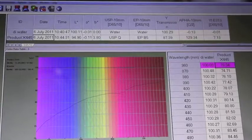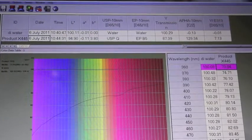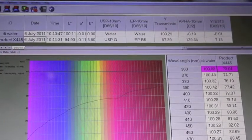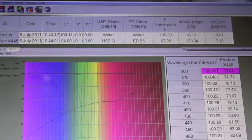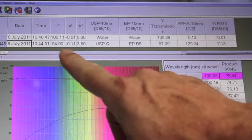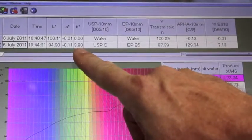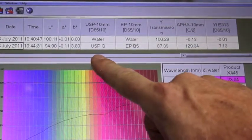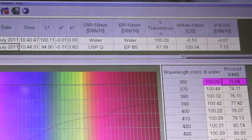In our first reading, I read the DI water back as a quick operational check, and it verified it as water with 100% transmission. I then measured our sample, and it came back with a lightness value of 94, a yellowness of about four units, and the corresponding USP and EP values.